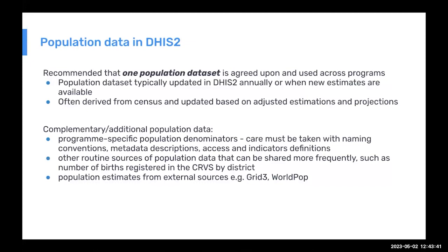In addition to having a core population dataset, it is possible and useful in many cases to include alternative denominators. Different health programs may want special population denominators — for example, population estimates based on service data. It's important to differentiate these other population estimates from your core population dataset. In countries with strong civil registration systems, you might want census population estimates but also bring in numbers from birth registrations, so you have an additional denominator available for live births from the CRVS.